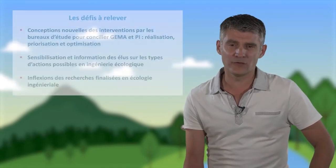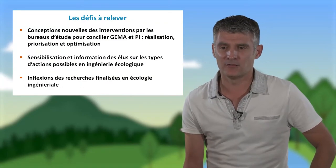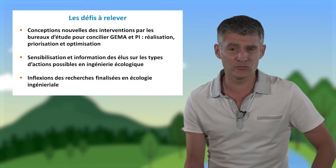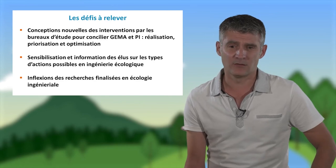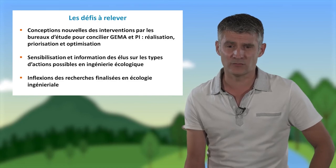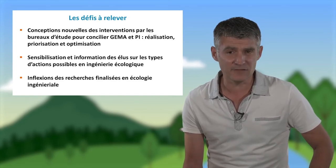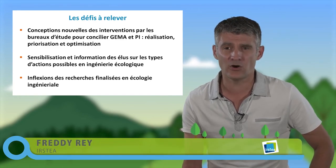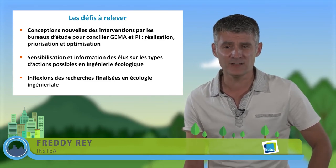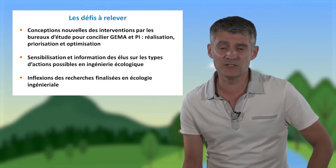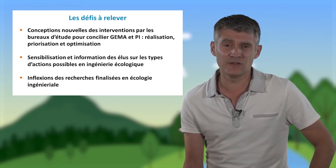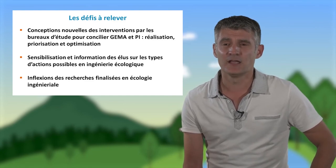On pourrait citer trois défis à relever pour l'ingénierie écologique dans le cadre de la GEMAPI. Premièrement, développer des conceptions nouvelles pour les interventions des bureaux d'études, afin de concilier GEMA et PI, que ce soit au niveau de la réalisation, de la priorisation ou de l'optimisation des interventions. Deuxièmement, sensibiliser et informer les élus sur les types d'actions possibles en ingénierie écologique. Et enfin, infléchir et orienter les recherches finalisées en écologie ingénioriale, une écologie au service de l'ingénierie qui cherche à réussir le défi de la conciliation entre gestion des milieux aquatiques et prévention des inondations.